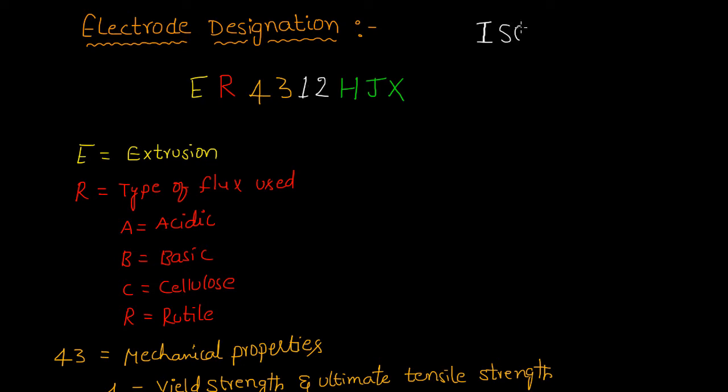Based on ISO, there is a special designation for electrodes that follows ER4312HTX. The first letter indicates which type of process is used to produce the electrode. Here, E means extrusion, same as BIS designation.